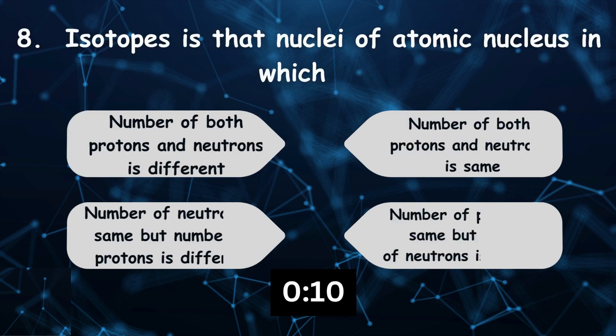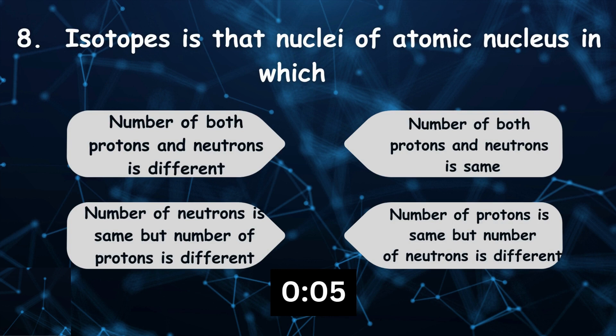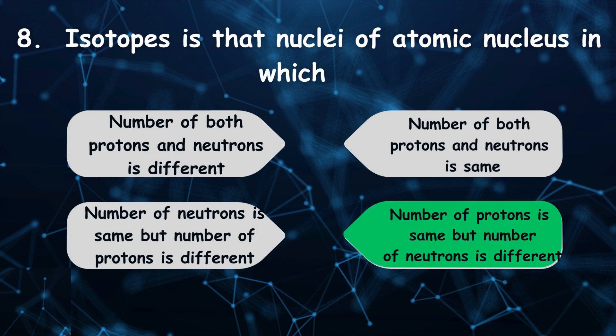Isotopes is that nuclei of atomic nucleus in which number of protons is same but number of neutrons is different.